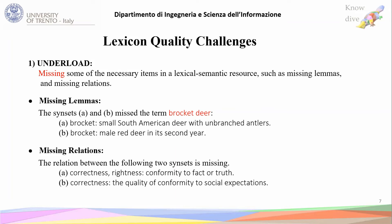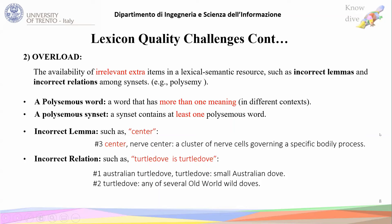For example, on missing lemmas: if we look at the following two sense-sets, the term 'brocket deer' is missing from both, as we see in sense-set A and sense-set B. Also, for missing relations, there is a missing relation between these two sense-sets — between sense-set A and sense-set B, where the first has lemmas 'correctness' and 'rightness,' and the second has 'correctness.' There is no relation between the two sets regarding fact and social expectations.